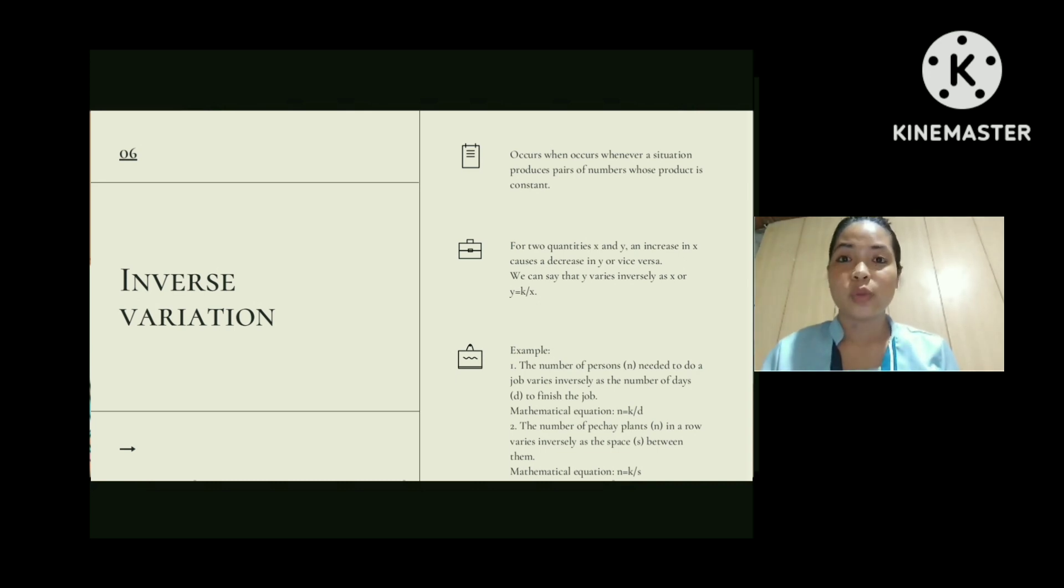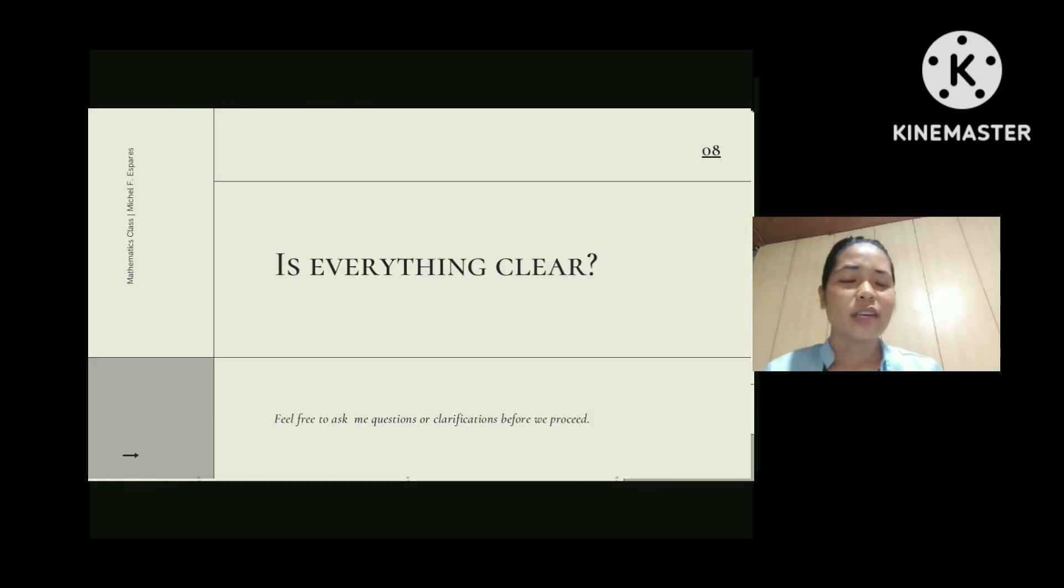Number two: The number of pitch-eye plants denoted as n in a row varies inversely as the space denoted as s between them. So the mathematical equation for this is n equals k over s. Did you get it? Did you understand?